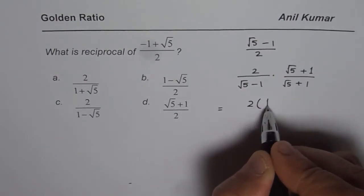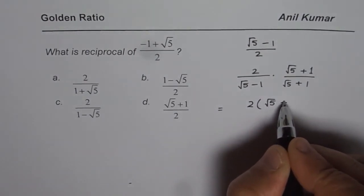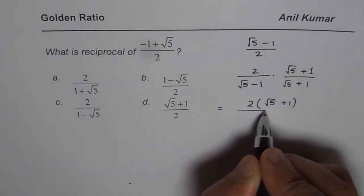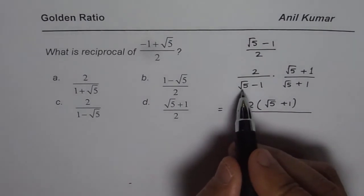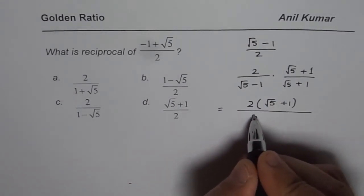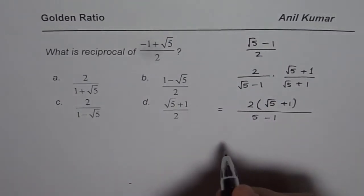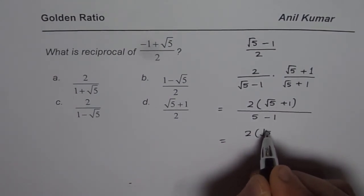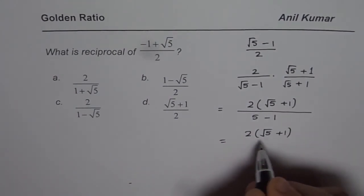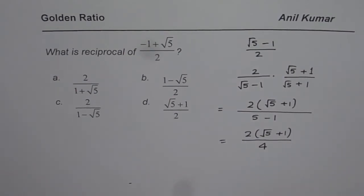I get 2 times √5 + 1 in the numerator and in denominator, difference of squares, right? √5 squared, which is 5 minus 1. So that gives me 2 times (√5 + 1) in the numerator and 4 in the denominator.